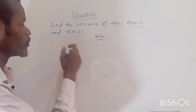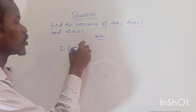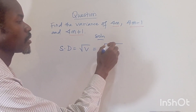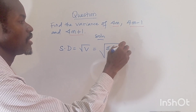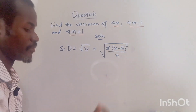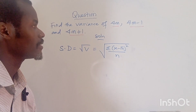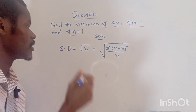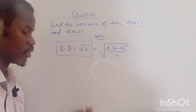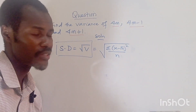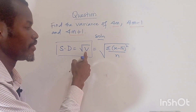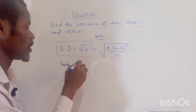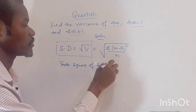Now we want to remember that our standard deviation is the square root of our variance, and the formula is the summation of (x minus the mean) squared, divided by n, which is the frequency. In this case we have n as 1, 2, 3. We know that standard deviation is the square root of variance, so variance is obtained by squaring both sides.